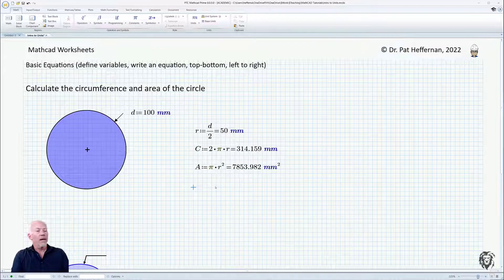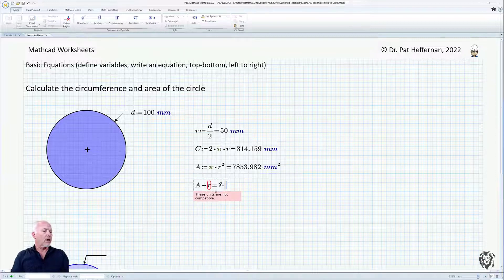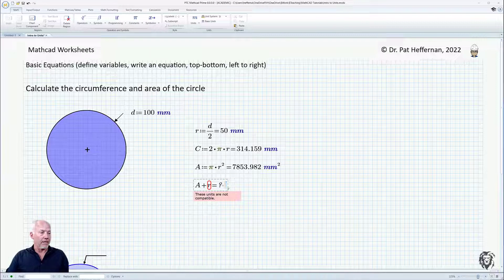And finally, just to show where this becomes really useful when you're doing complicated calculations, I'm going to try to add area plus r. And you see, it won't do it. Remember last time it did that and came up with a number, but the number was really meaningless because you're trying to add a linear distance to an area, and they're incompatible. Because the units are now defined, Mathcad is smart enough to recognize that those are incompatible units and won't let you make the addition. So let's get rid of that.